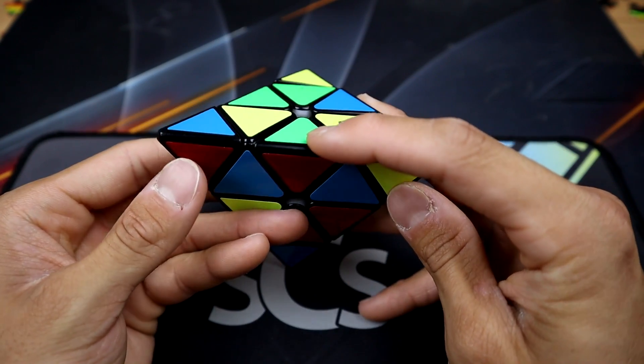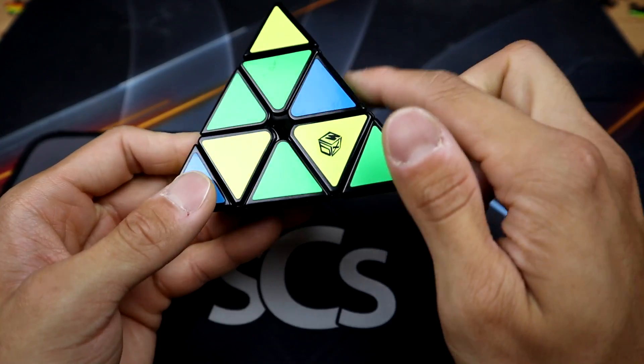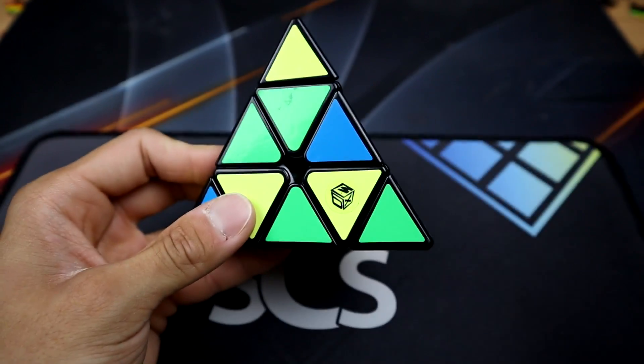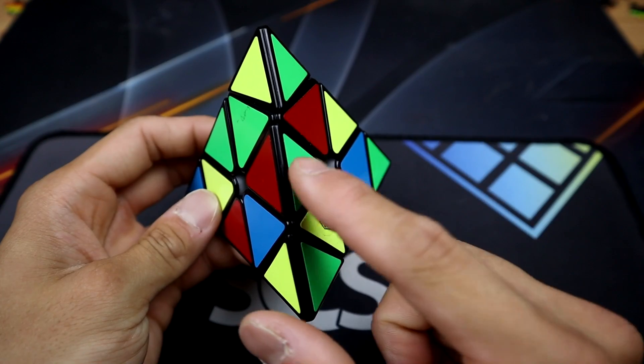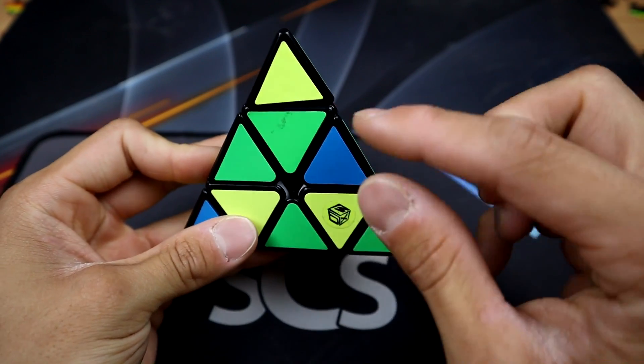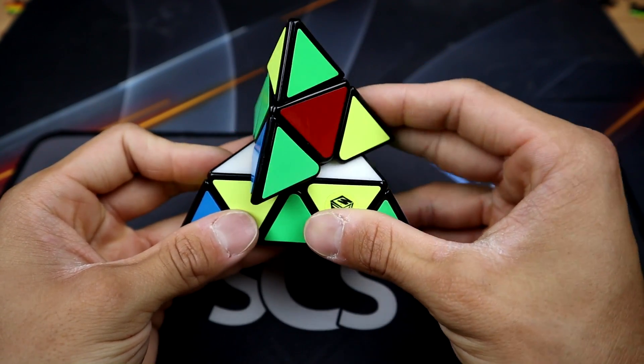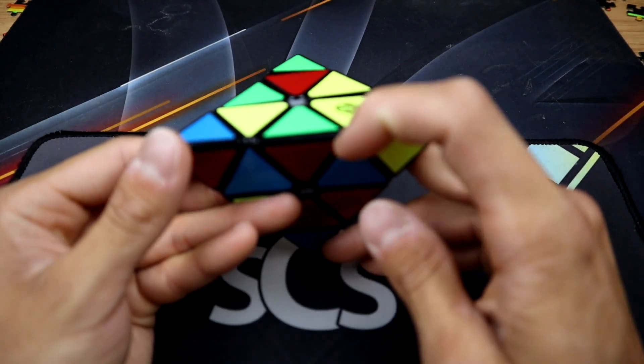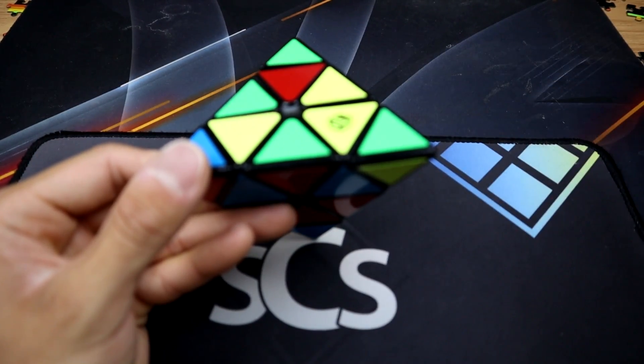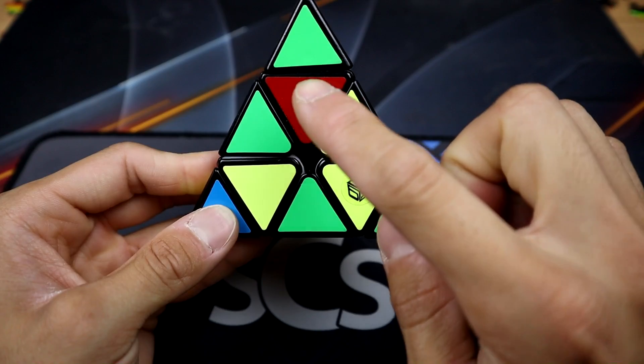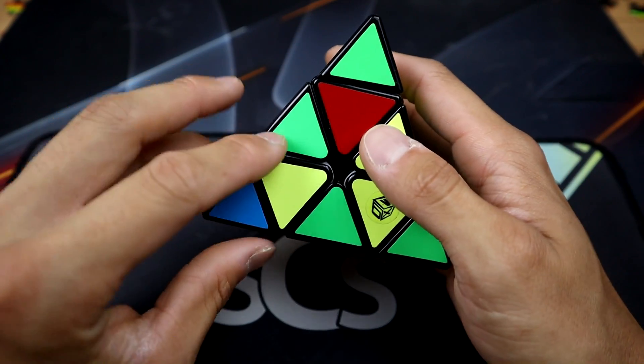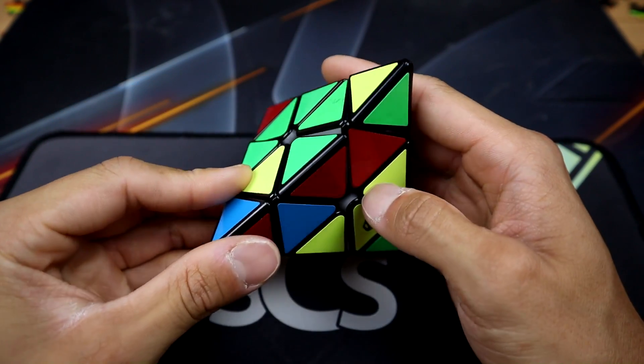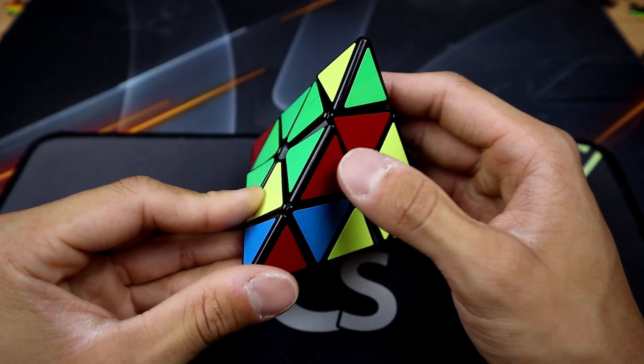First we need to find the green-red edge. It is right here. So notice how when I insert it using the right move, like this, it is backwards. So what we need to do, we need to move this layer so that this green-red edge here is right on top of this red center piece. Now when we move this to the left, we have solved this green-red edge.